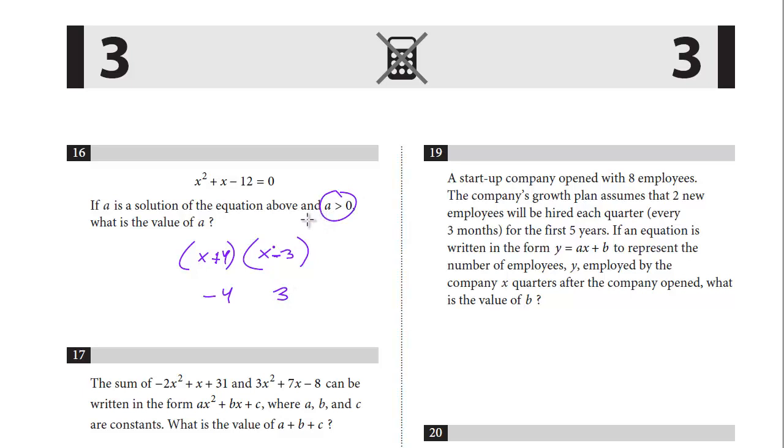So the solutions are negative 4 and 3, and they give us a condition that A is positive. Also, keep in mind, there is no negative on the grid. You can never have a negative, so even if they didn't tell you that, it has to be a positive number for a grid-in, and so the answer here is 3.